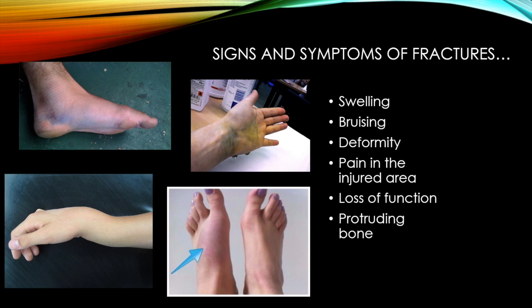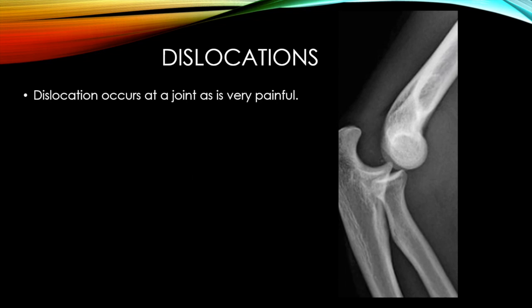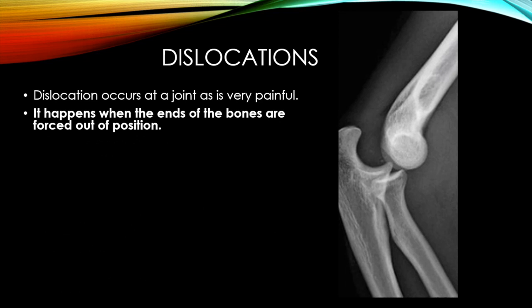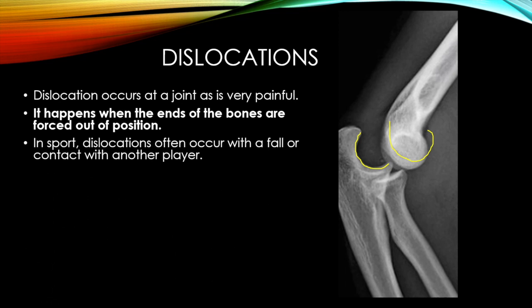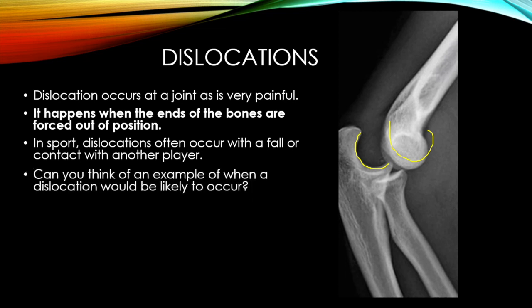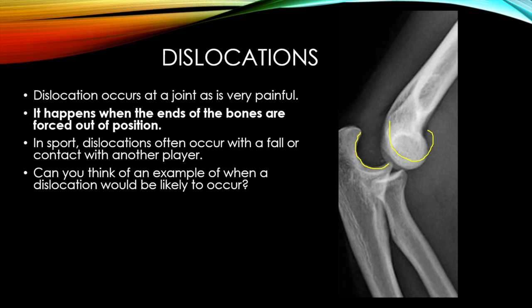Dislocations are an extremely unpleasant immediate injury — very, very painful. It's when the ends of the bones are forced out of position. As you can see, this bone should be sitting in this bone here, however it has completely left and is forced out of its usual position. In sport it often occurs when a player might fall over or contact another player. Can you think of an example where a dislocation would be likely to occur? You might have even seen this happen on TV.